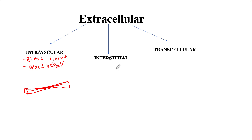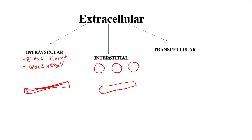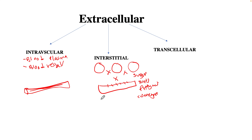The interstitial space is anything within the capillaries of the blood vessels or between the cells. It is the space between the cells and the capillaries. The interstitial space contains water and solvents such as sugar, salt, fatty acids, certain coenzymes, and minerals like sodium, potassium, chloride, and bicarbonate.